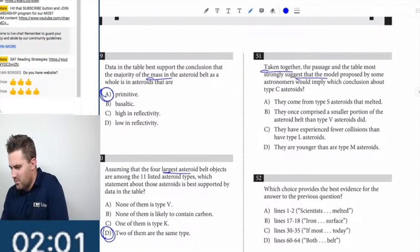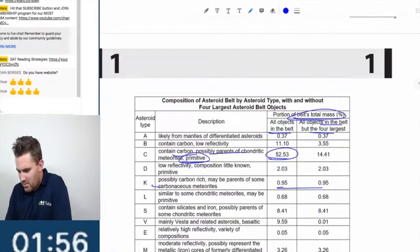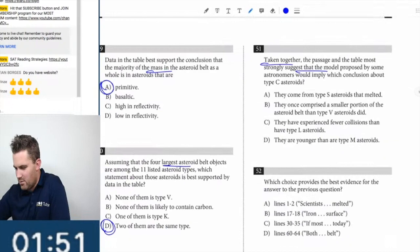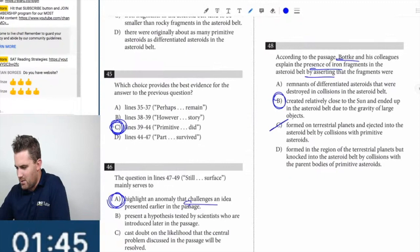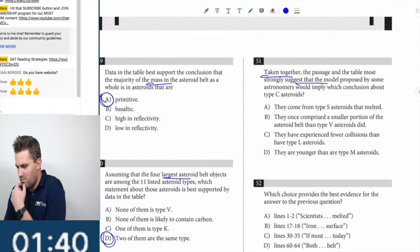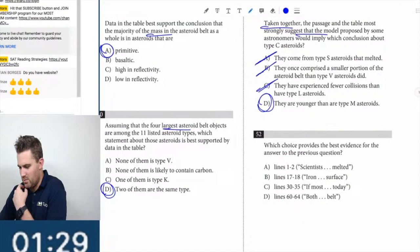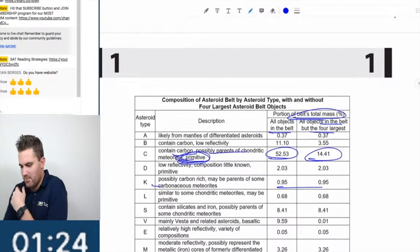By which conclusion about type C asteroids. Type C asteroids contain carbon appearance, they're primitive, they're a significant portion. All objects developed by the four largest. They come from type S that melted? No, because they're primitive, right, they didn't melt down these ones. Let's compare the small portion of the asteroids, type B. No, it's definitely not these two. These are all primitive, right, so it's got to be D. I don't even know if that's true, but it's got to be D by default because they haven't melted off. This is a significant portion and they're primitive, so if you remember that from the passage.